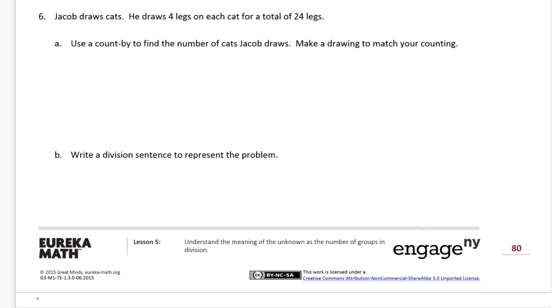Our last one. Jacob draws cats. He draws four legs on each cat for a total of 24 legs. Use a count by to find the number of cats Jacob draws. Make a drawing to match your count. I'm going to do the drawing first. The count by, you'll see what that is. It's going to be counting by fours, because there's four legs on each cat. So he's going to draw cats, and we need 24 legs. You might already know how many cats you need, but I'm just going to draw cats. I'm going to draw a body of a little cat. One, two, three, four.